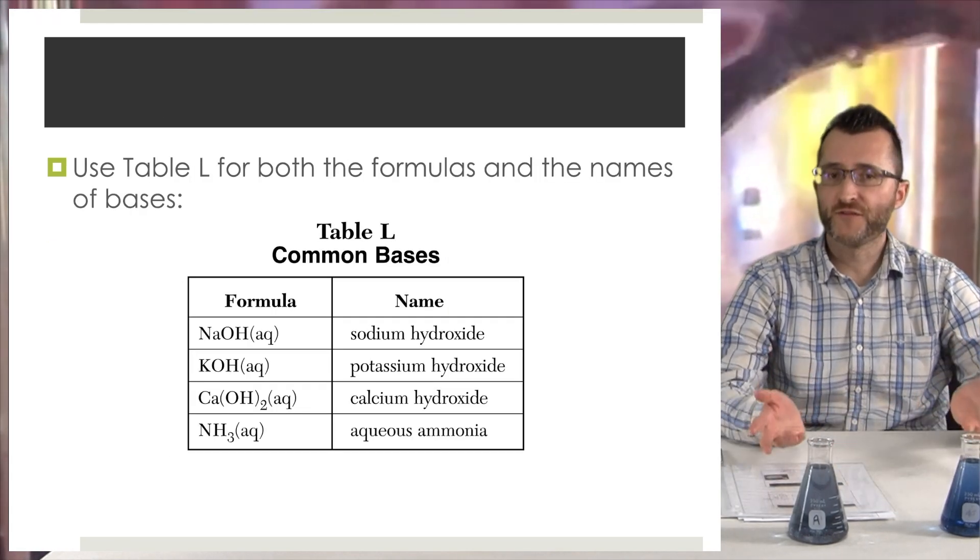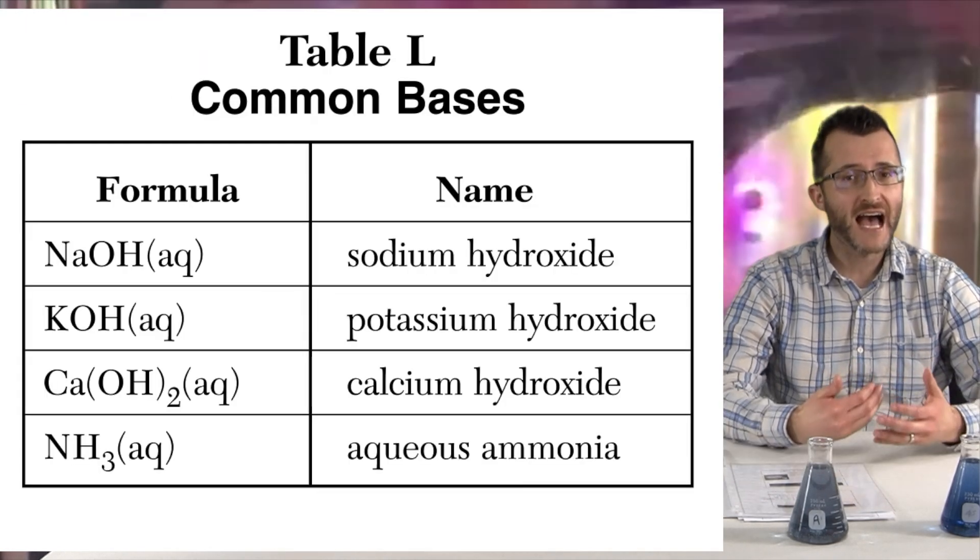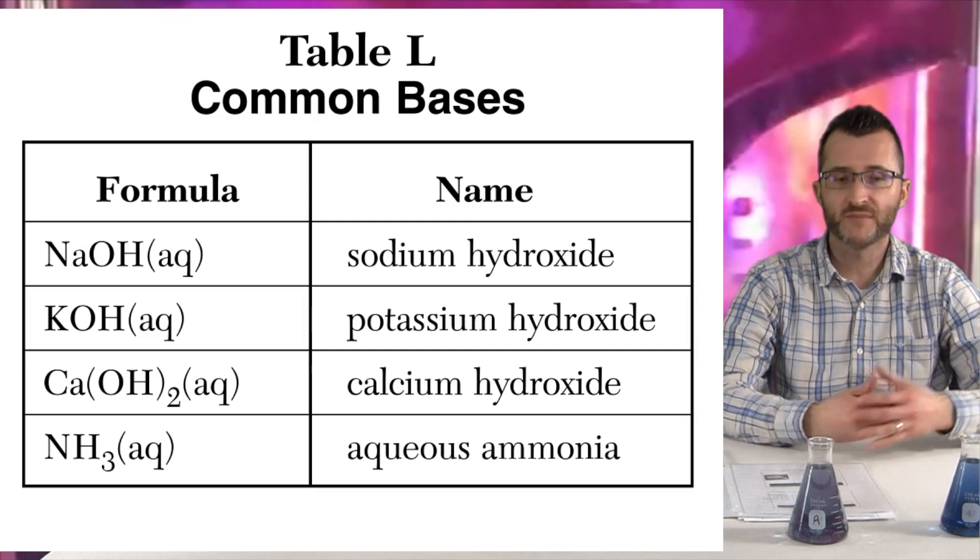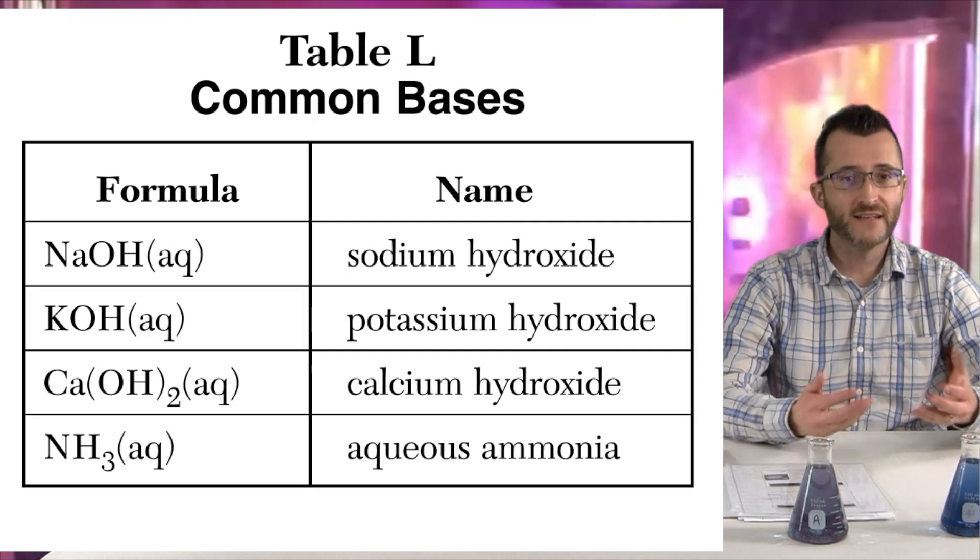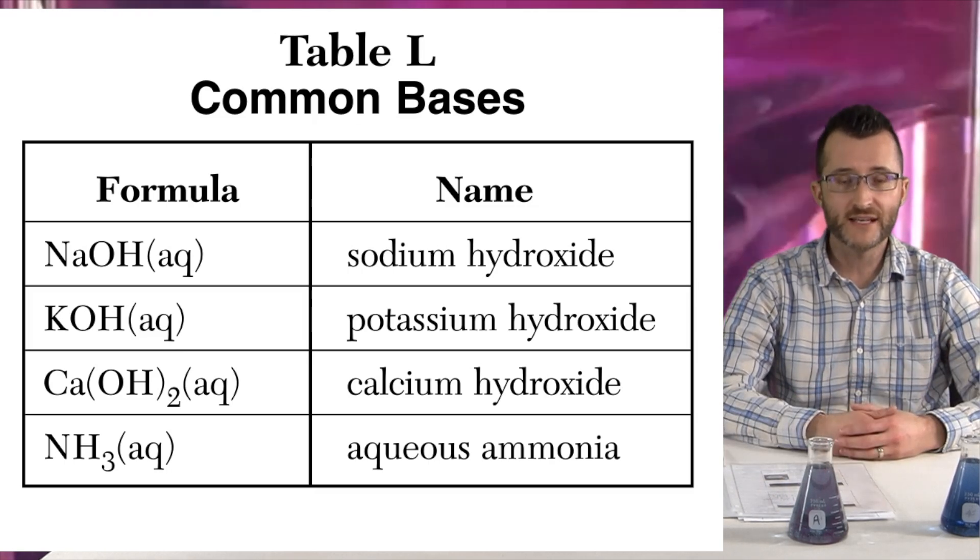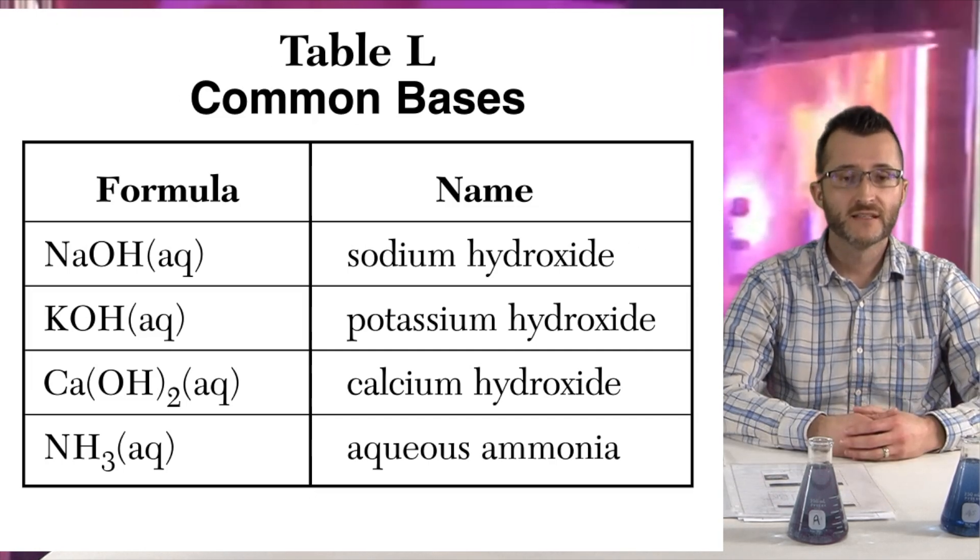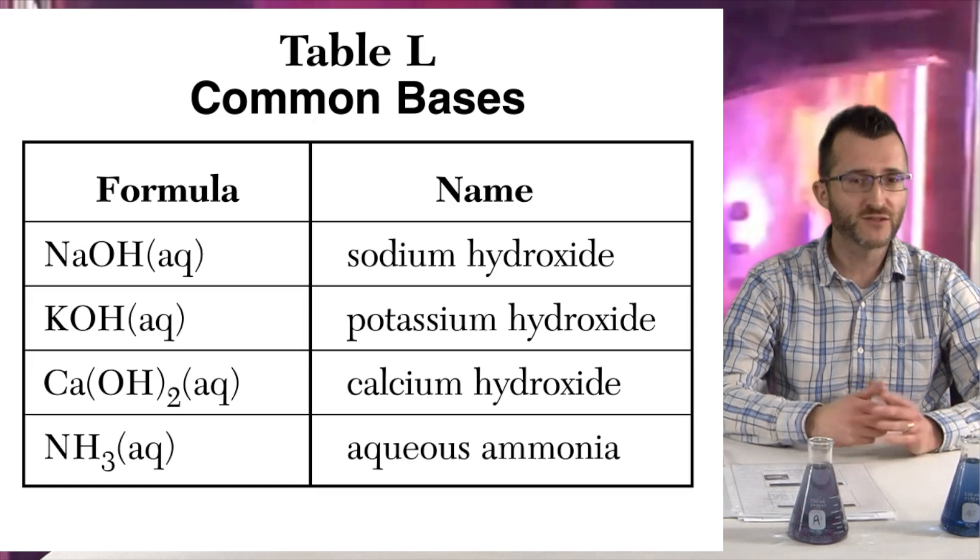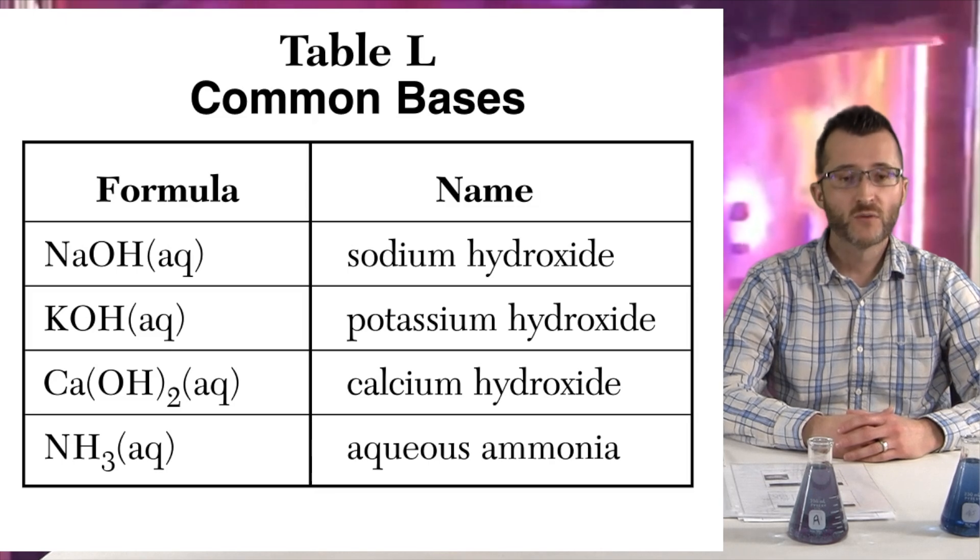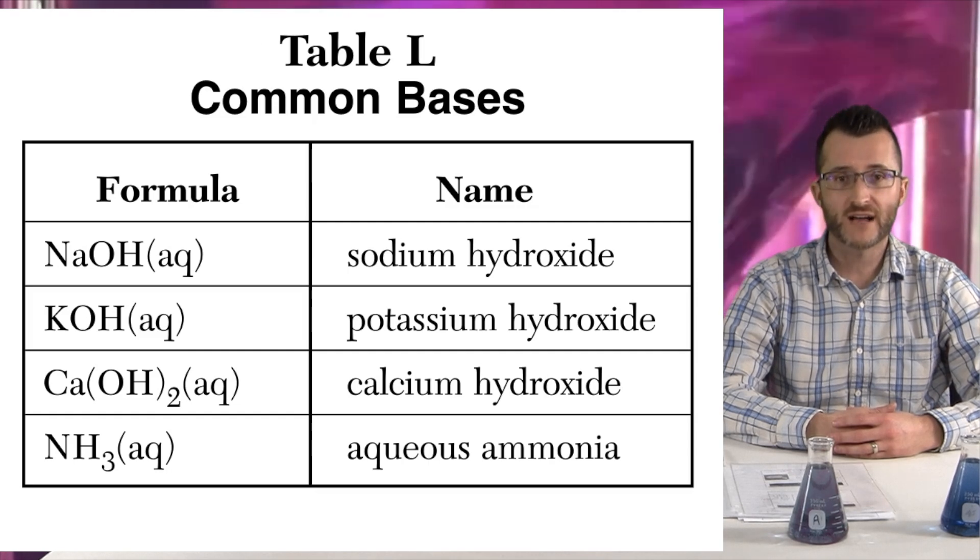Use table L for both the formulas and the names of bases. Now taking a look at table L, this is actually not an exhaustive list of all bases because bases are metal hydroxides. And this clearly doesn't list all possible metal hydroxides. Again, like table K, we have the formula on the left. We see that all bases are aqueous. We also see that they contain OH at the end of the formula. The name is on the right. Now there is one sort of strange one on this list. And that would be the last one, NH3 aqueous. That is aqueous ammonia. We're going to talk a little bit later about why this is classified as a base. But clearly we can see that this is not a metal hydroxide.